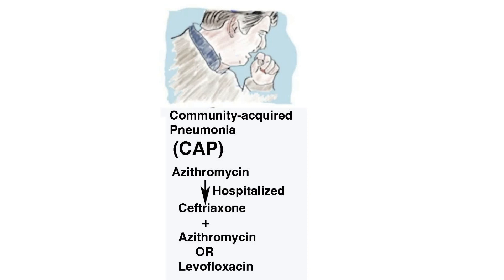Two other empiric regimens that you may want to review in the future are bacterial meningitis and urinary tract infections, because these empiric regimens are covered on the USMLE exams. For your test in this class, these empiric regimens will not be included as part of the testing material. However, this exercise does illustrate how you can use the antibiogram to construct an empiric antibiotic regimen.